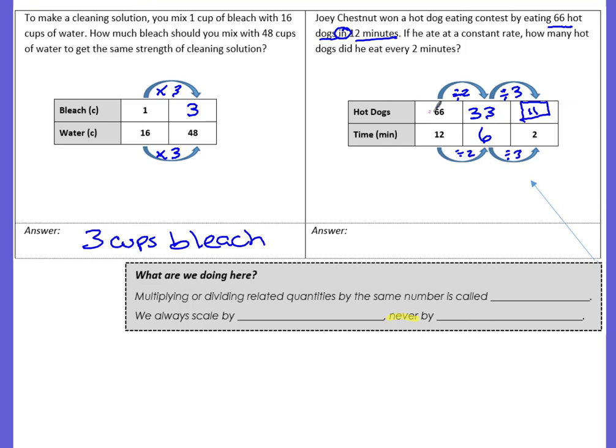And what I was trying to do at the beginning was you could bypass this middle step right here. And you could just go straight from 66, straight from 12 to 2, by recognizing that we need to divide by 6. Do the same thing up here. 66 divided by 6 is 11. 12 divided by 6 is 2. Either way, you get the same answer. 11 hot dogs.